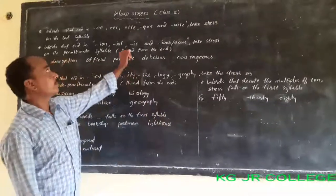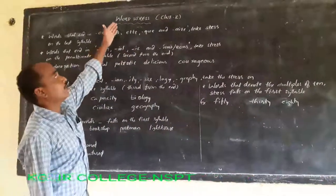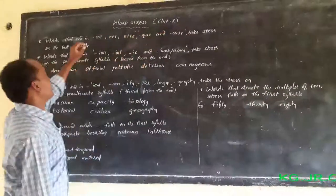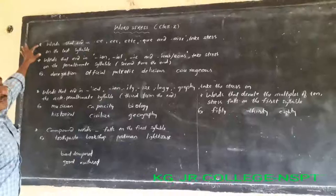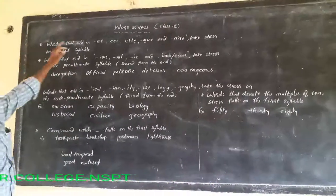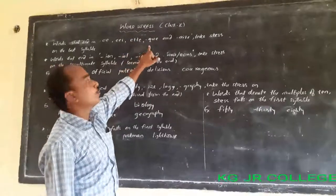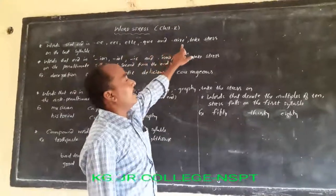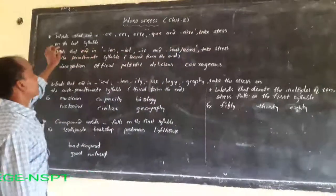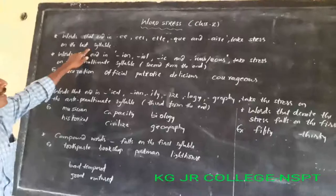Welcome back to online class. In previous class, we have learned word stress. In class 1, we learned up to this rule. What is the word stress ending? EE, EER, ETTE, QUE, and AII — use the stress on the last syllable, also known as the ultimate syllable.